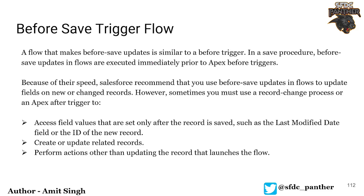One very good thing related to our before-save trigger: whenever you are updating the same record, you can access the parent record without querying it. For developers familiar with Apex triggers, before-save flow is equivalent to the before trigger in Apex. This is why they are executed immediately prior to the before Apex trigger — meaning updates made in your before-save flow will be available to your before Apex trigger for any additional complex logic or validation.